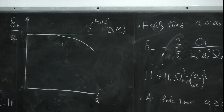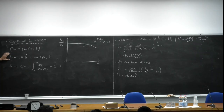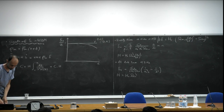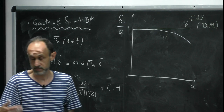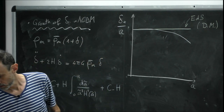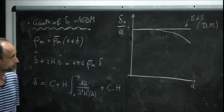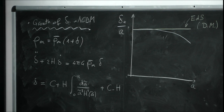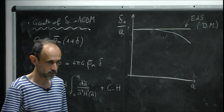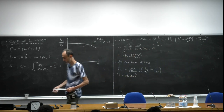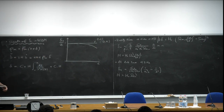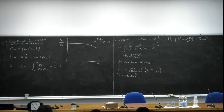By the way, this equation is very general — it is also valid when dark energy is not a cosmological constant, and is valid as long as dark energy does not cluster. We will see that a bit later. So we have learned that the onset of Lambda domination not only affects the background evolution — which has been measured with supernovae — but it also affects the growth of perturbations. This is something that large-scale structure surveys are going to constrain and measure.